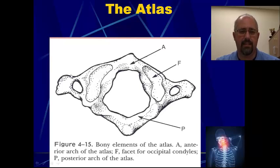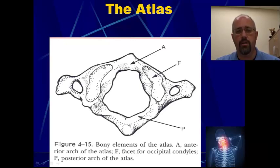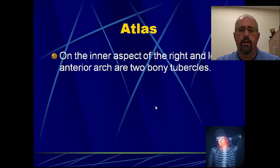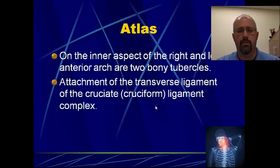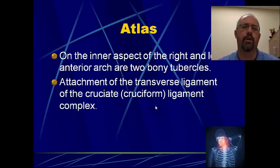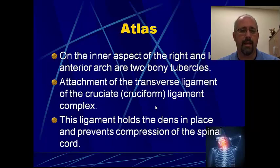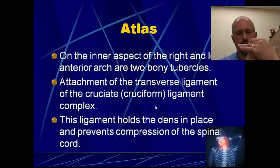On the lateral masses or the sides where the transverse processes would be, we have our transverse foramen, but we also have these large facet positions where the head articulates on top of the atlas. Inside the right and left anterior arch, there are two tiny little bony tubercles — those are the attachment of the transverse ligament, which is part of a cruciate or cruciform cross-shaped ligament complex in the neck. That cross-shaped ligament complex is there to hold the odontoid peg tightly in contact, so C1 and C2 are held tightly in place to make sure there's stability, but also that the odontoid peg sitting on top of the ring allows for rotation.